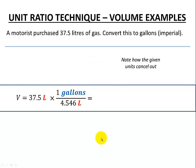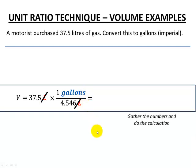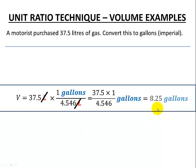Let's see how the units go. Liters are gone and I'm left with gallons. So just a single step calculation here. Gather our numbers so very simple calculation 37.5 times 1 divided by 4.546 and we can get our overall final answer of 8.25 gallons.